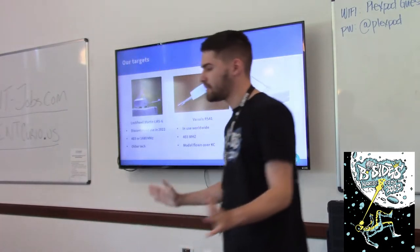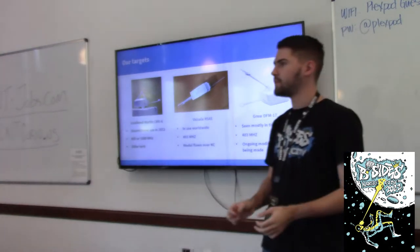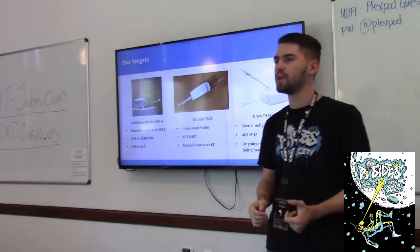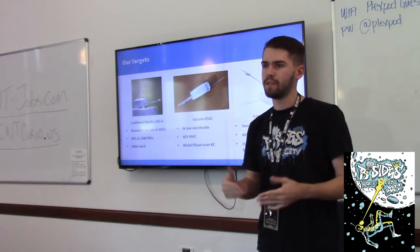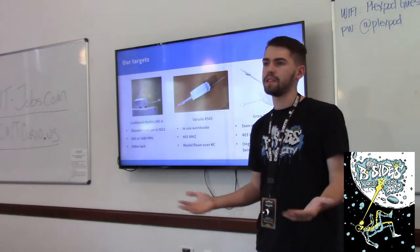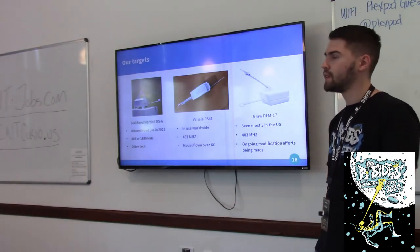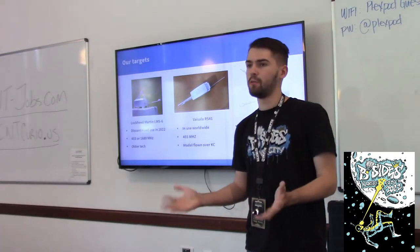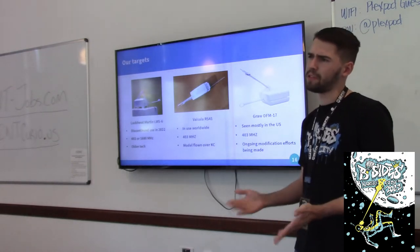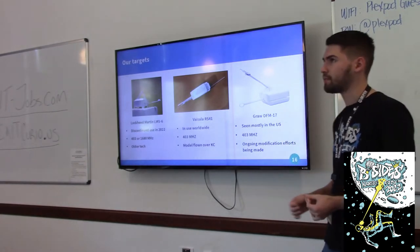Let's get into the fun stuff — hacking and modifying these weather balloons. I'll be talking about three different models today: we have the Lockheed Martin, the Vaisala, and the Grawl. The Lockheed Martin was used primarily in the United States from about 2011 to 2022, when they finished up that cycle with the contracts. We were one of the last stations to still use it, discontinued in July, so you probably won't find it except maybe at NASA launches. They used both 400 MHz and 1.6 GHz.